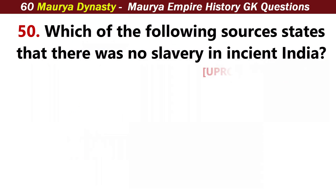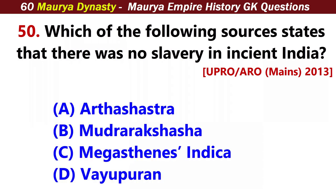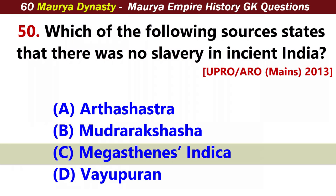Which of the following sources states that there was no slavery in ancient India? Answer C: Megasthenes' Indica.